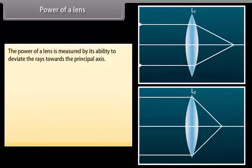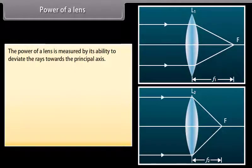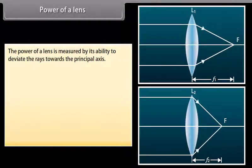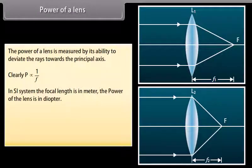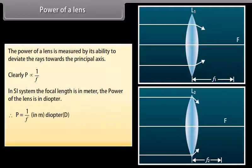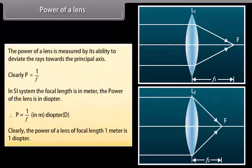Power of a lens. The power of a lens is measured by its ability to deviate rays towards the principal axis. Lens L2 has a focal length less than L1, so it bends rays more, and its power is greater. Power P is directly proportional to 1/F. In SI units, focal length is in meters and power is in diopters: P = 1/F (in meters). A lens of focal length 1 meter has a power of 1 diopter.